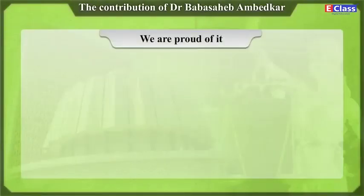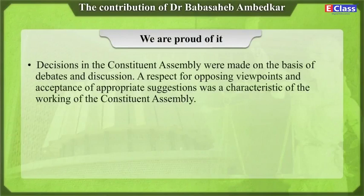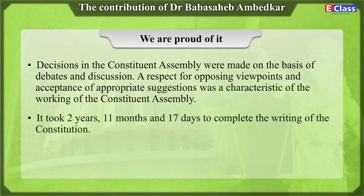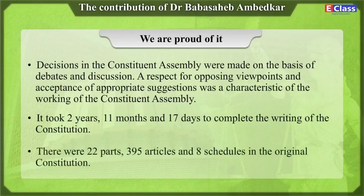We are proud of it. Decisions in the Constituent Assembly were made on the basis of debate and discussion. A respect for opposing viewpoints and acceptance of appropriate suggestions was a characteristic of the working of the Constituent Assembly. It took 2 years, 11 months and 17 days to complete the writing of the Constitution. There were 22 parts, 395 articles, and 8 schedules in the original Constitution.